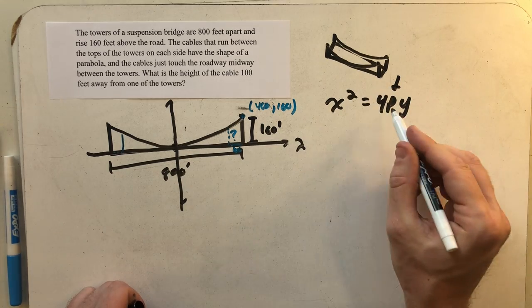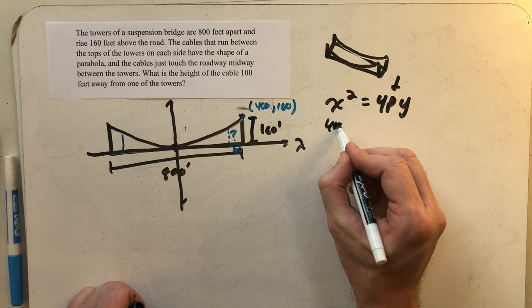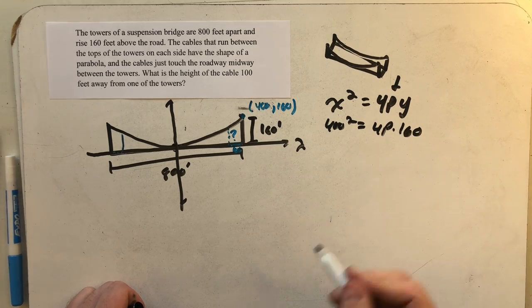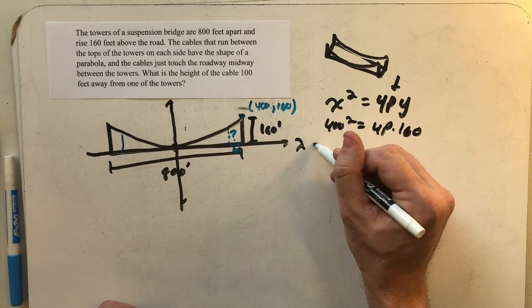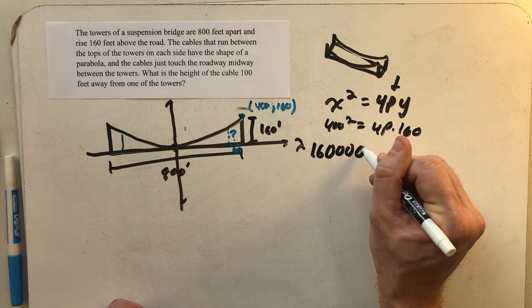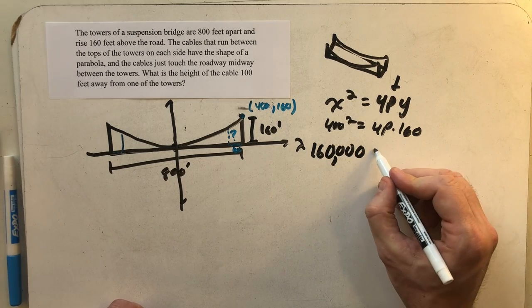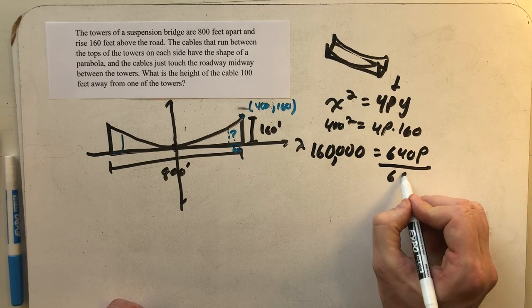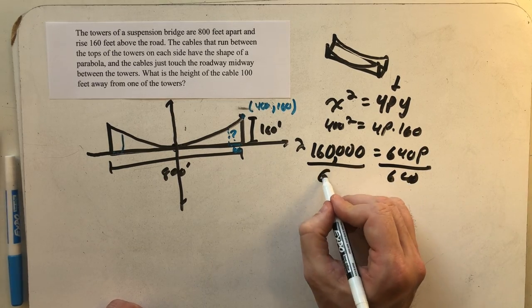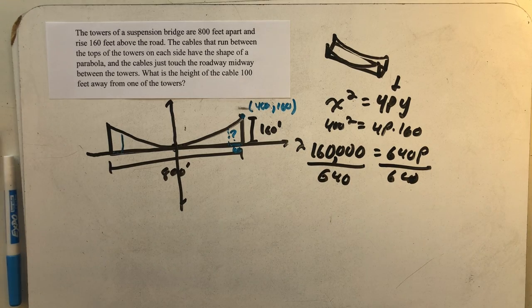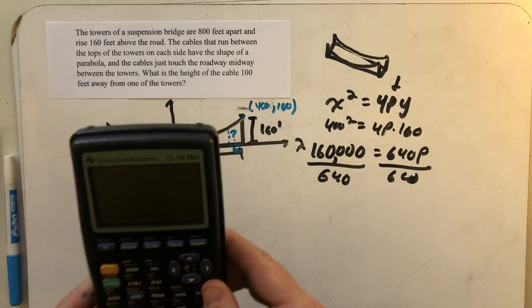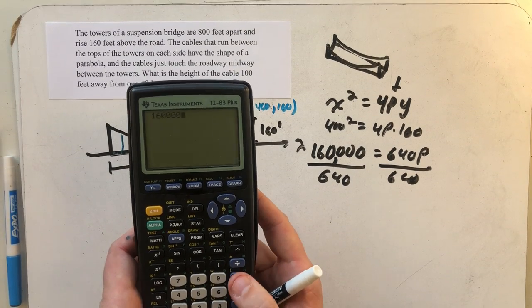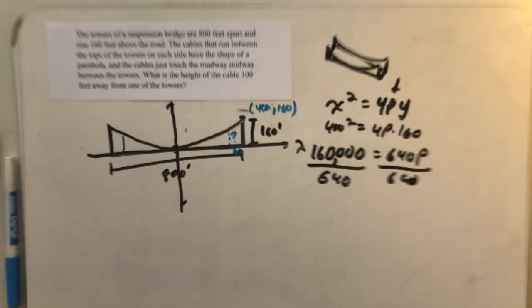Because I have an x and a y, I can find p. 400 squared equals 4 times p times y. So 400 squared would be 16 followed by four zeros. 160,000 is equal to 640 times p. Dividing both sides by 640 shows me that p is equal to 250. So 160,000 divided by 640, p is 250.